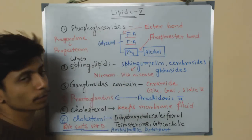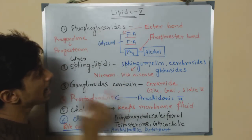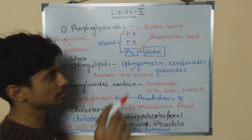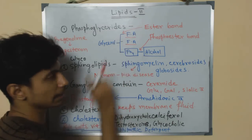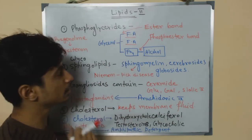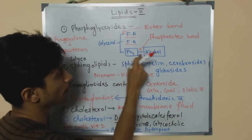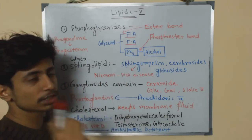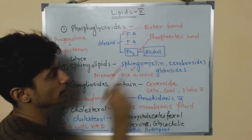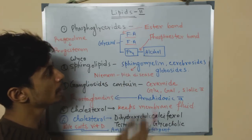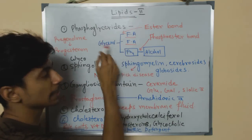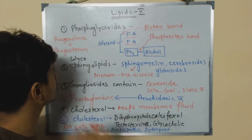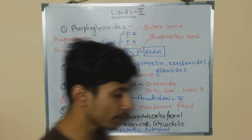In phosphoglycerides, you can see bonds between the fatty acids and glycerol, and also a bond between phosphate and alcohol. The bond between phosphate and alcohol is termed the phosphoester bond. The bond between fatty acid and glycerol is termed the ester bond — that's the difference.